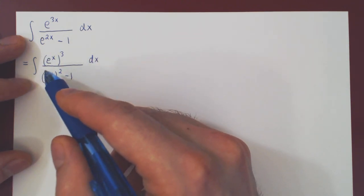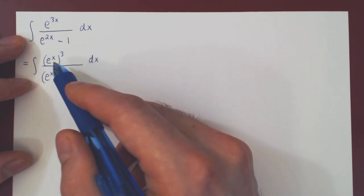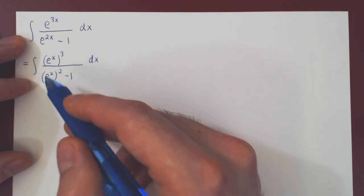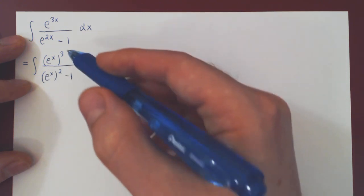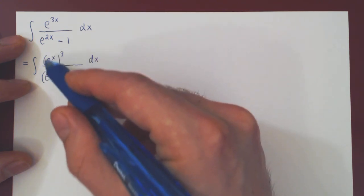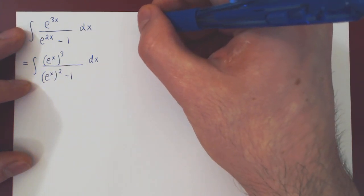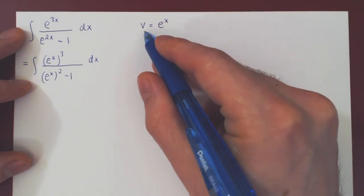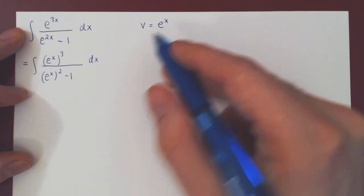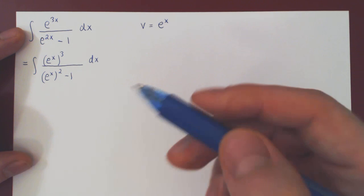If you think of e to the x as a single variable, what you have in both cases is a polynomial in terms of e to the x. e to the x cubed is a polynomial in terms of e to the x. e to the x squared minus 1 is a polynomial in terms of e to the x. So what you have here is a rational function in terms of e to the x. So we can make the following substitution, which will transform the integral into one of a rational function in terms of v.